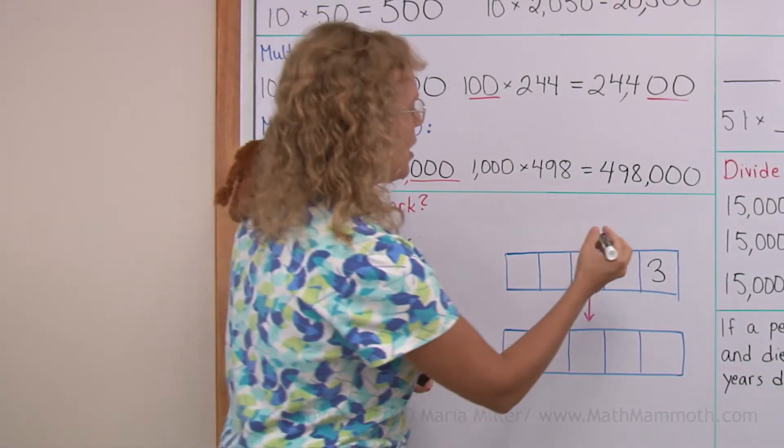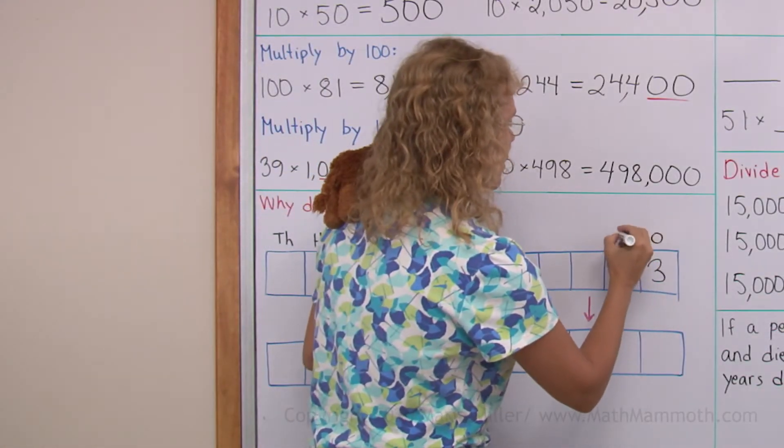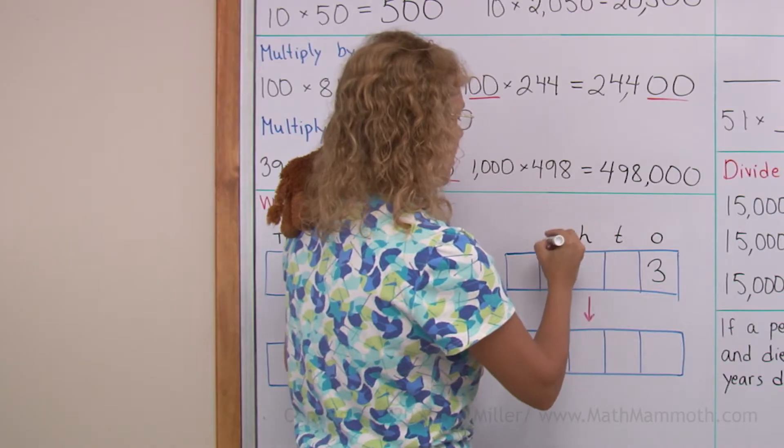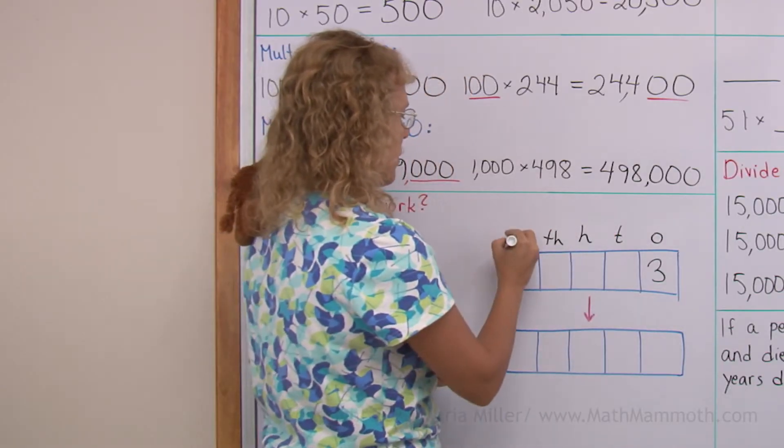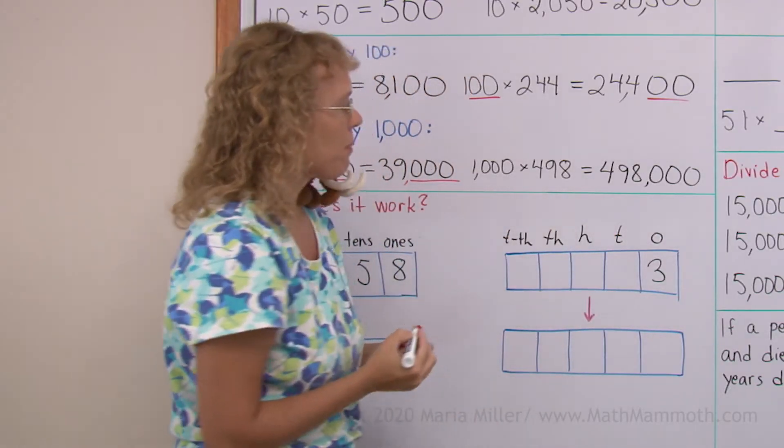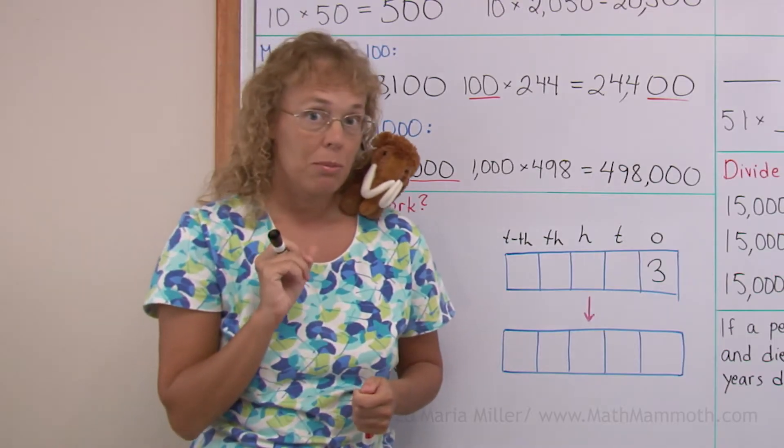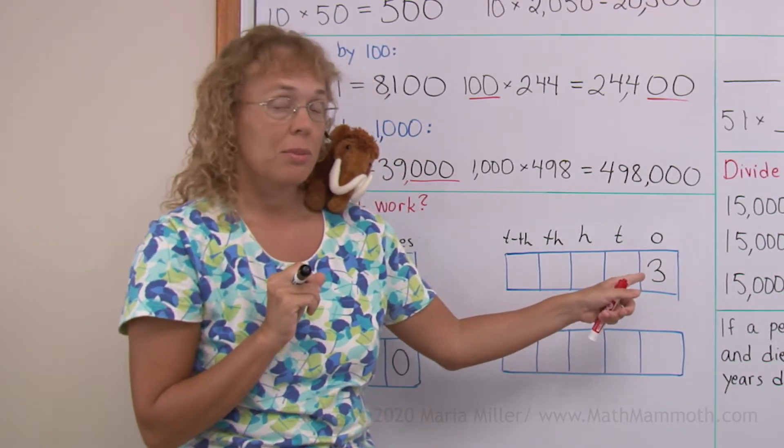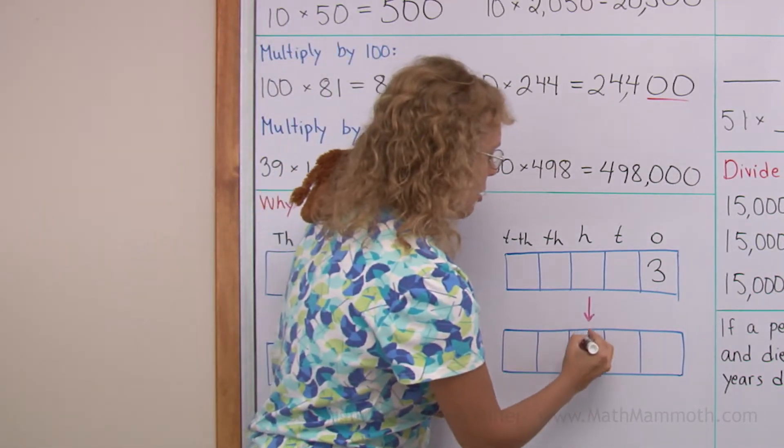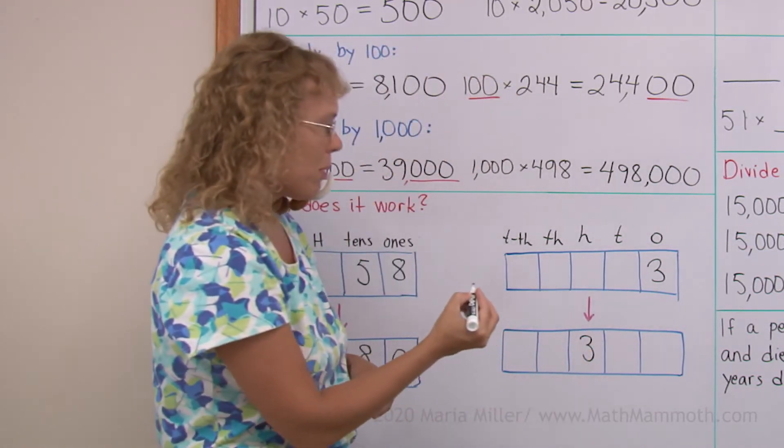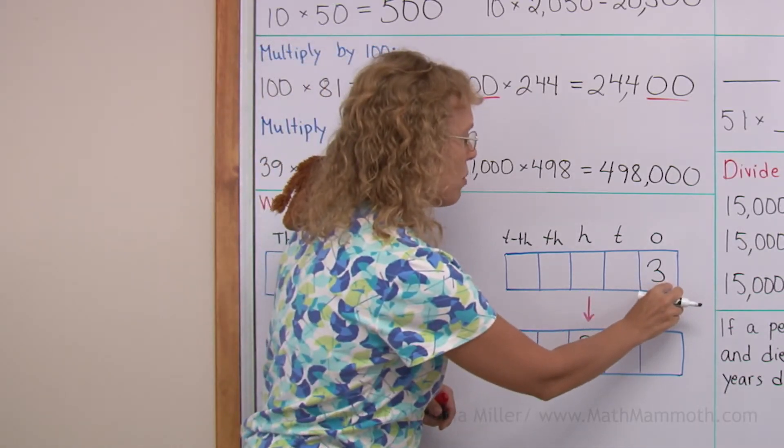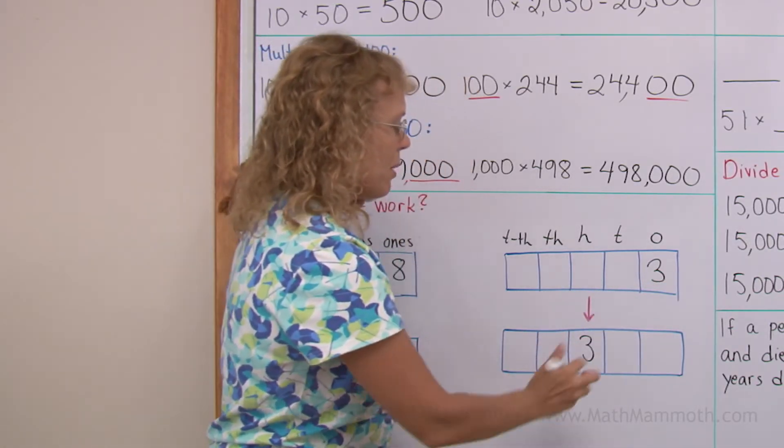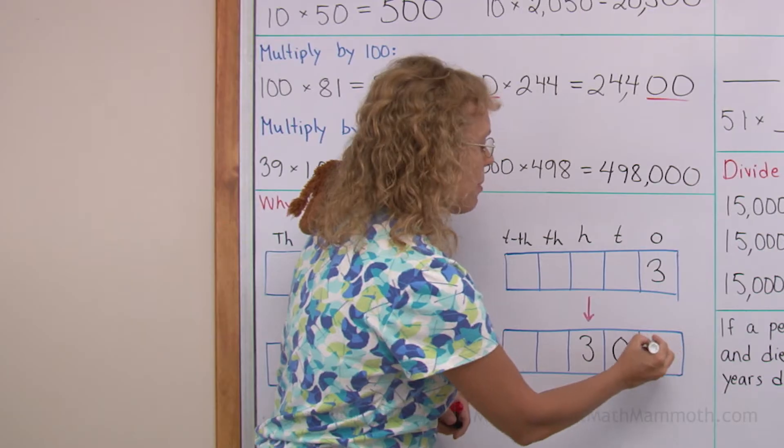Let's try it here too. This would be my ones, tens, hundreds, thousands, ten thousands. If I multiply that number by 100, three becomes 300, right? So I write three here in the hundreds place. It's like this number moved two steps. But then I need to write zeros in the empty spaces. Or if I have something more here, let's say I have 293. The same thing happens to two and nine. They also move two spaces this way.